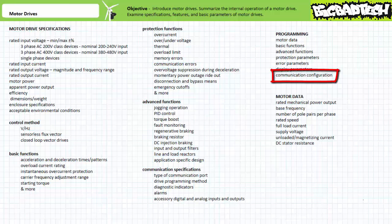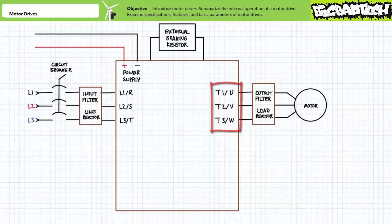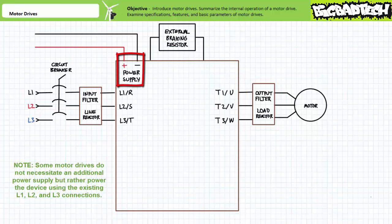A simplified block diagram of a generic motor drive intended to operate with three-phase AC includes three-phase AC input terminals specified L1, L2, and L3 (or sometimes R, S, and T depending upon country of origin), and three-phase output terminals specified T1, T2, and T3 (or sometimes U, V, and W). Between the three-phase AC input, one might observe external disconnection means like a circuit breaker, as well as any accessory external input filters or line reactors. Between the three-phase AC output and the motor, one might observe any accessory external output filters or load reactors. A motor drive also necessitates an external power supply connection to power up the internal electronics.